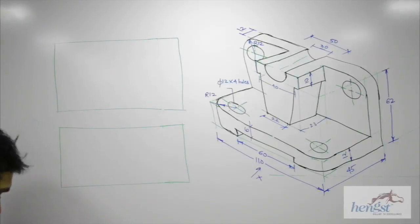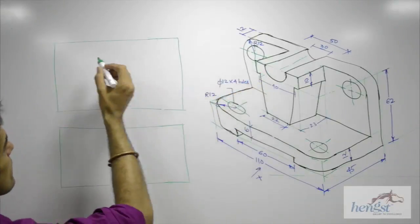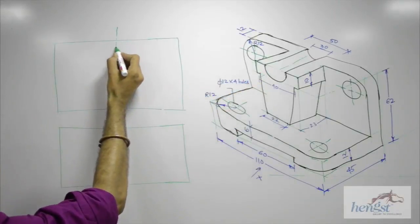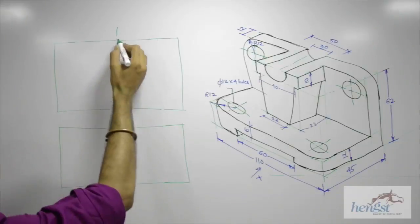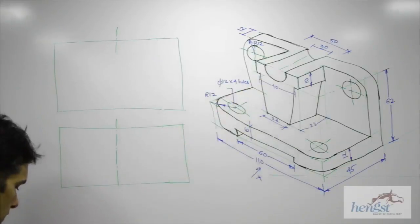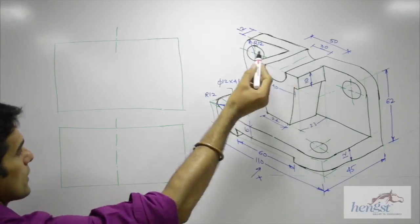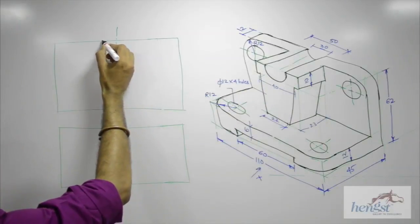Always remember we will start with a view which has a circle. In this case we will take center line and start with this circle. The radius is given as 30, so radius would be 15.